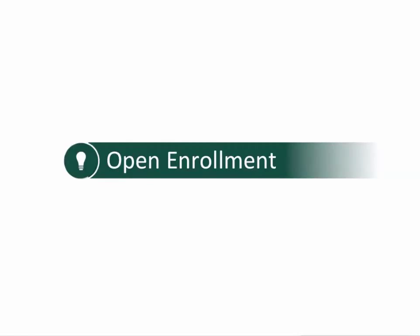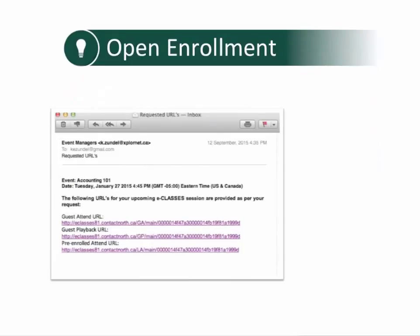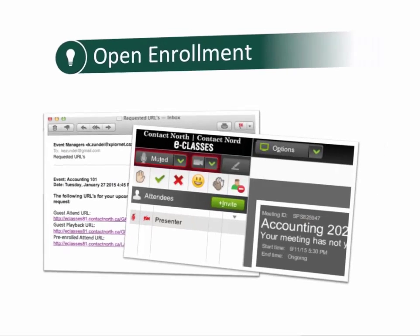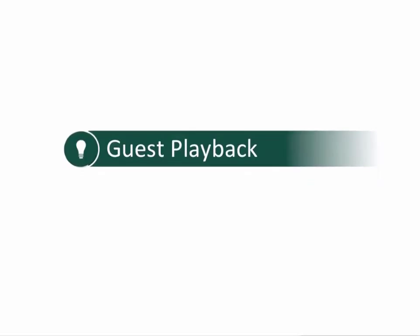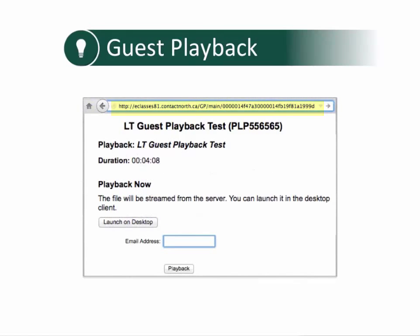With the Open Enrollment option, you can arrange to invite guests who are not registered or pre-enrolled to attend your sessions. Upon request, you will receive a unique URL that you will provide ahead of the session, or you can invite last-minute guests directly from the session. Attendees invited through Open Enrollment do not receive login credentials and will only be able to access the session with the URL that you have provided. Following the session, give those guests access to the recorded playback by providing them with another URL directing them to the recording.